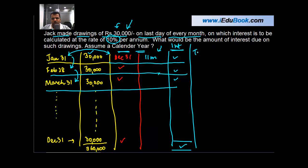When the drawings amount is fixed and the time gap between two drawings is fixed, then you can calculate the total interest on drawings using this variable. What do you do? You take the total drawings,